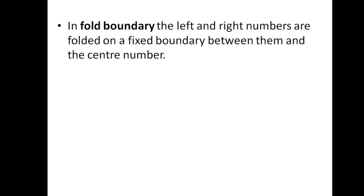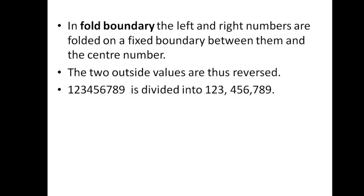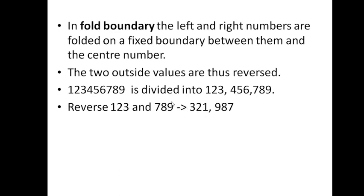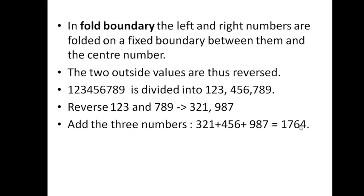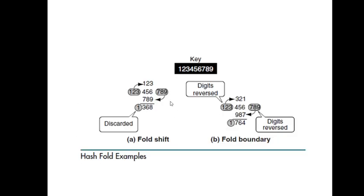Fold boundary is slightly different. Using the same key 123456789, you also reverse the first and third partitions — 123 becomes 321, and 789 becomes 987 — while the middle partition (456) remains unchanged. Then add all three: 321 + 456 + 987 = 1764. Drop the carry 1, giving address 764.